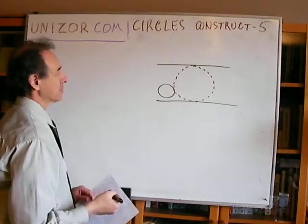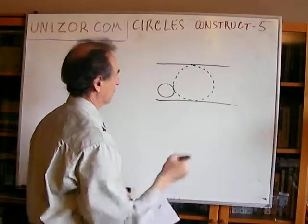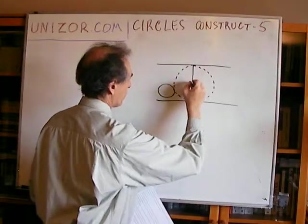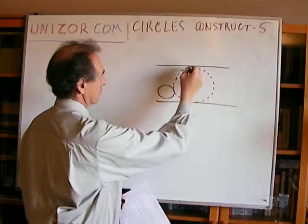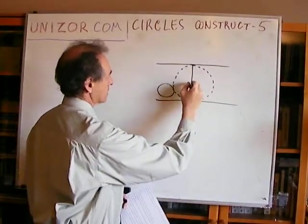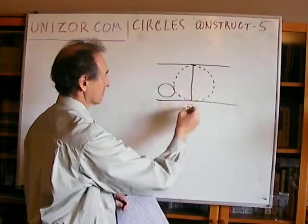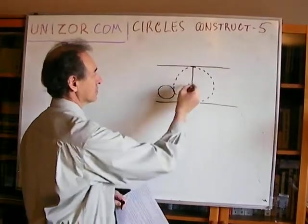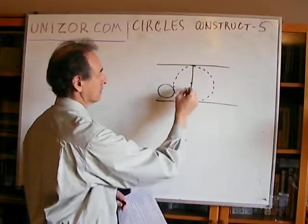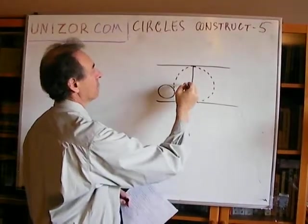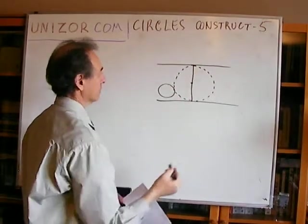What does it mean that a line is tangent to a circle? The radius to the point of tangency is perpendicular to the line. Since the two lines are parallel, the perpendicular to the tangent points is one and the same line — perpendicular to both parallel lines. So the two radii form one diameter.